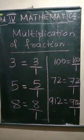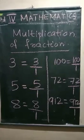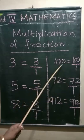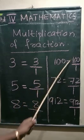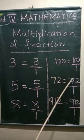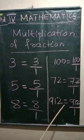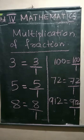The whole number is 1. Now, 100 equals 100 by 1. 72 equals 72 by 1. 912 equals 912 by 1. The whole number is a fraction.